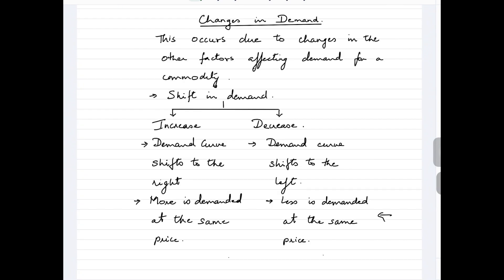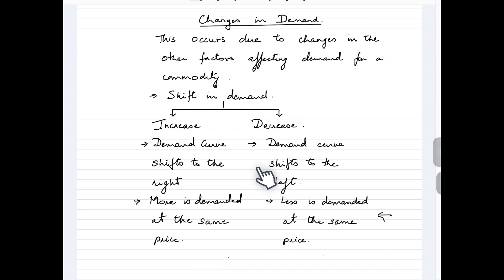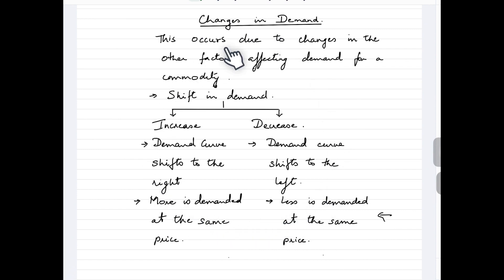Changes in demand occur due to changes in other factors that affect the demand for a commodity. When we talk about other factors, it indicates that price — as a factor that affects demand — is playing no role here. These factors cause the demand curve to shift, and this shift can either be an increase in demand or a decrease in demand. An increase means the demand curve shifts to the right, where more quantity is demanded at the same price. A decrease means the curve shifts to the left, and fewer quantities are demanded at the same price.